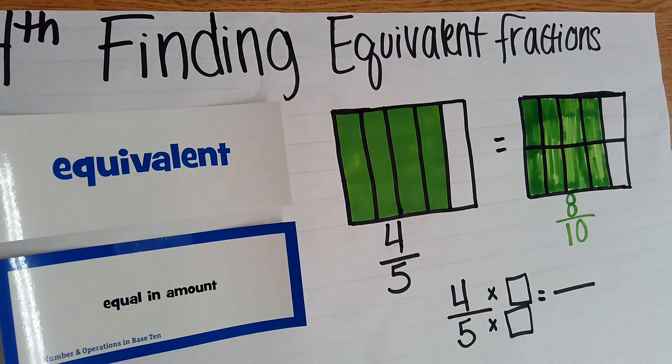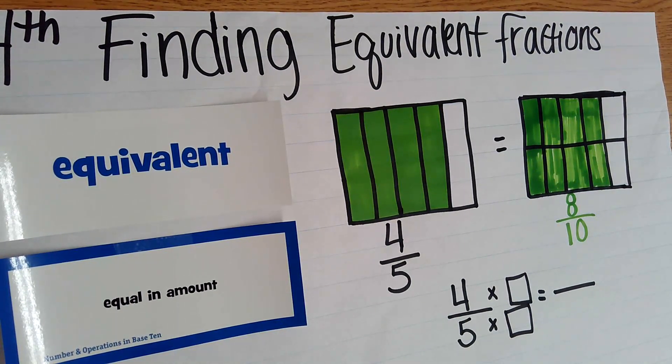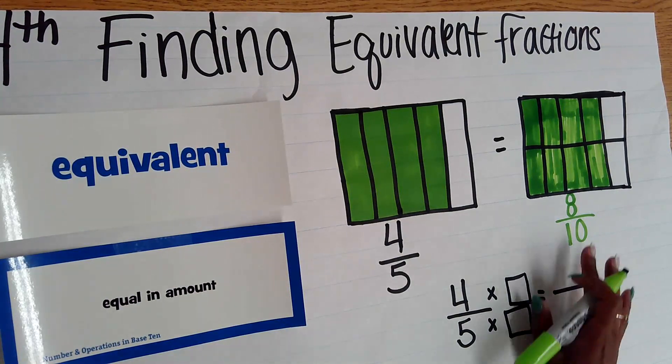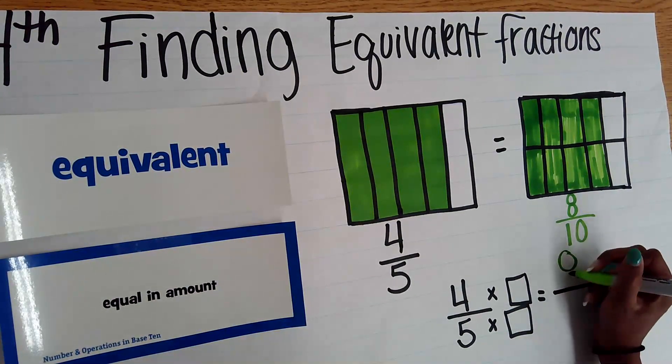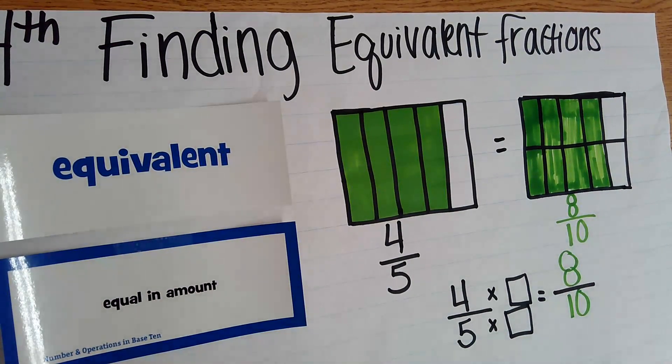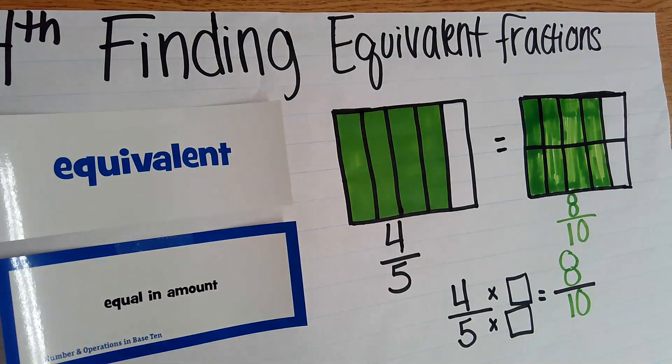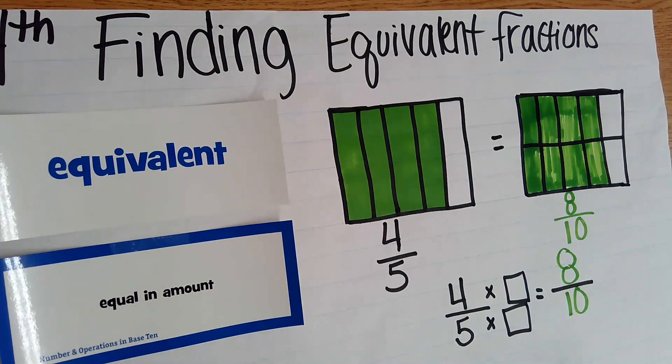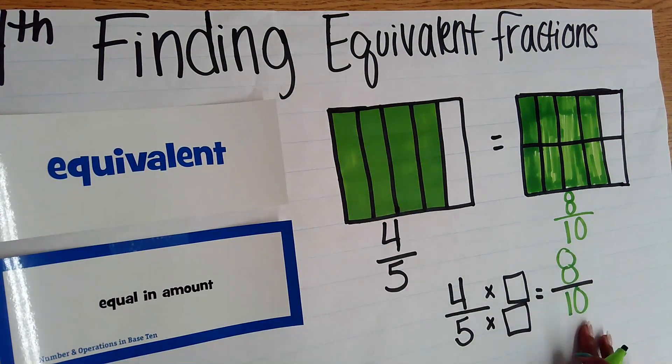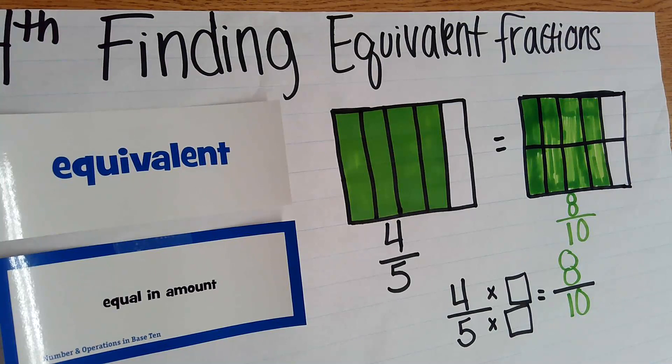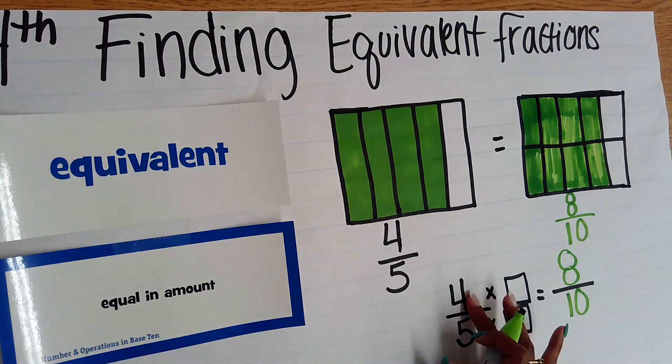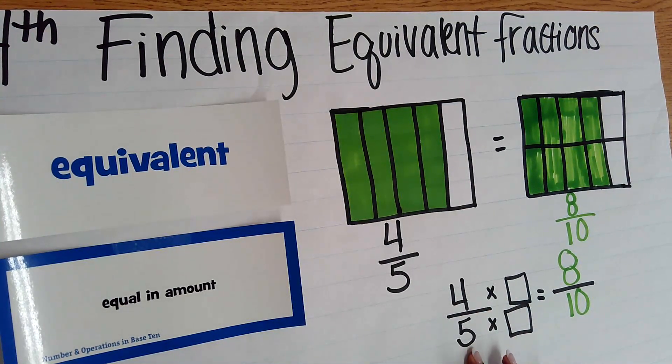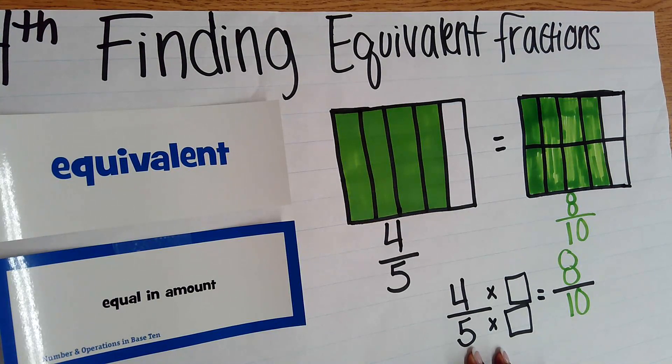Now, in fourth grade, we take it a step further and we bring multiplication into the mix when we're talking about equivalent fractions. So if I have my eight tenths over here, we need to think about how did I get to eight tenths from four fifths using multiplication. When you are making an equivalent fraction using multiplication, you have to multiply the numerator, which is the top number, and the denominator, which is the bottom number, by the same number.